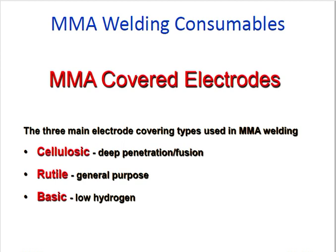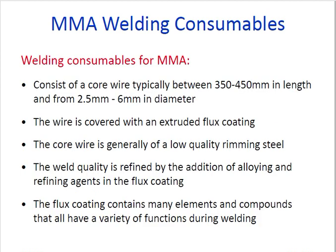For MMA electrodes, the three main covered electrode types used are cellulosic, rutile, and basic. Cellulosic is for deep penetration fusion, rutile is general purpose, and basic is low hydrogen. Welding consumable for MMA consists of a core wire typically between 350–400 mm in length and 2.5 to 6 mm in diameter. The wire is covered with an extruded flux coating.